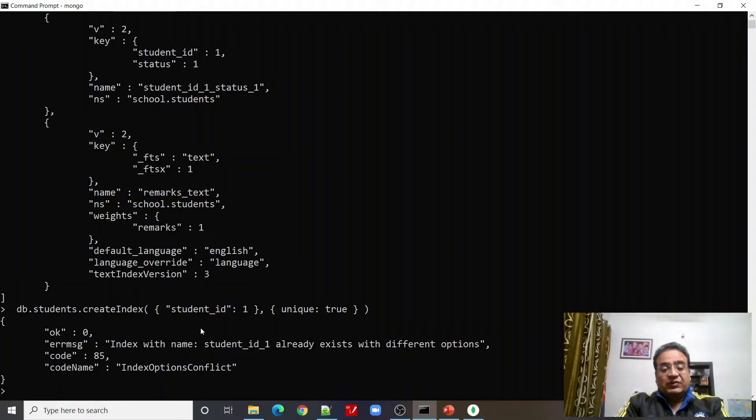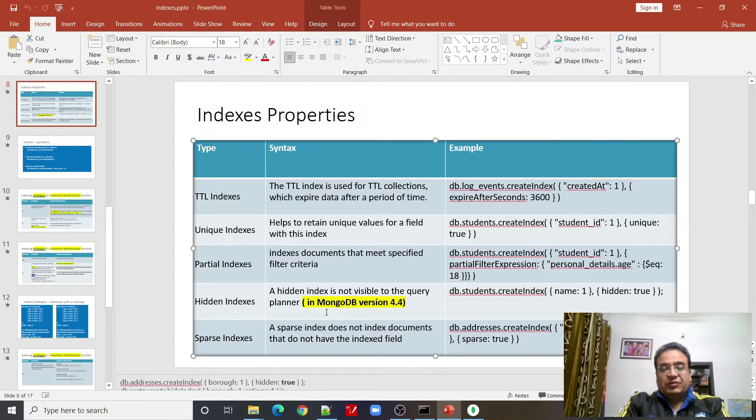Now let us create a new index. This is how we can create a unique index. It says that index with this name already exists so we cannot create this index. We will have to remove this index first then only we can create this index. But the point is by giving this option you can create an index over this. Same way you can create other type of indexes also.